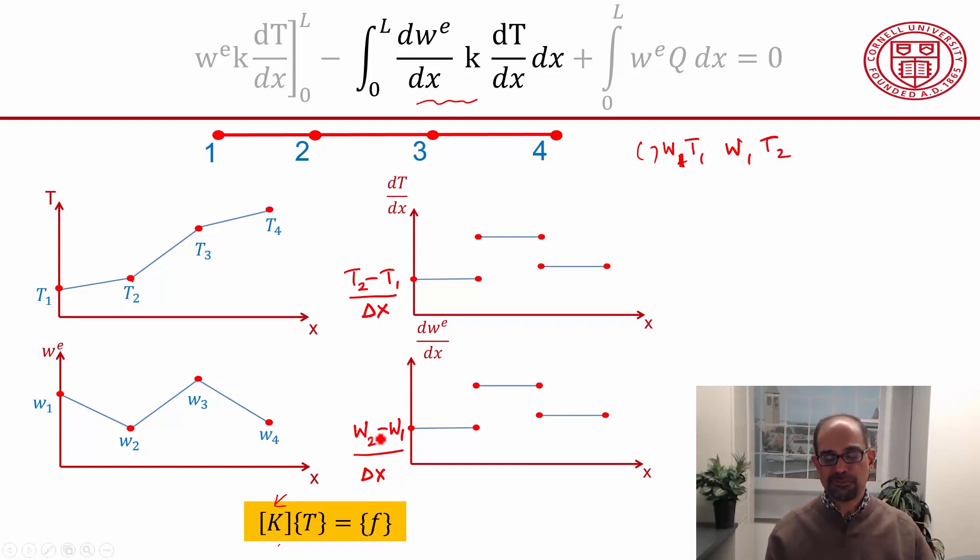And there's a very important takeaway from this. If I want to know the algebraic equation at this particular node, which temperature values will involve? I look at what all w2 is multiplying. w2 is multiplying t1, it's multiplying t2 that comes from integral over the first element, and then w2 will multiply t2 and also t3. Which means that when I write the algebraic equation, the equation at this node will involve the temperature value here, here, and here. It won't involve the temperature value here.